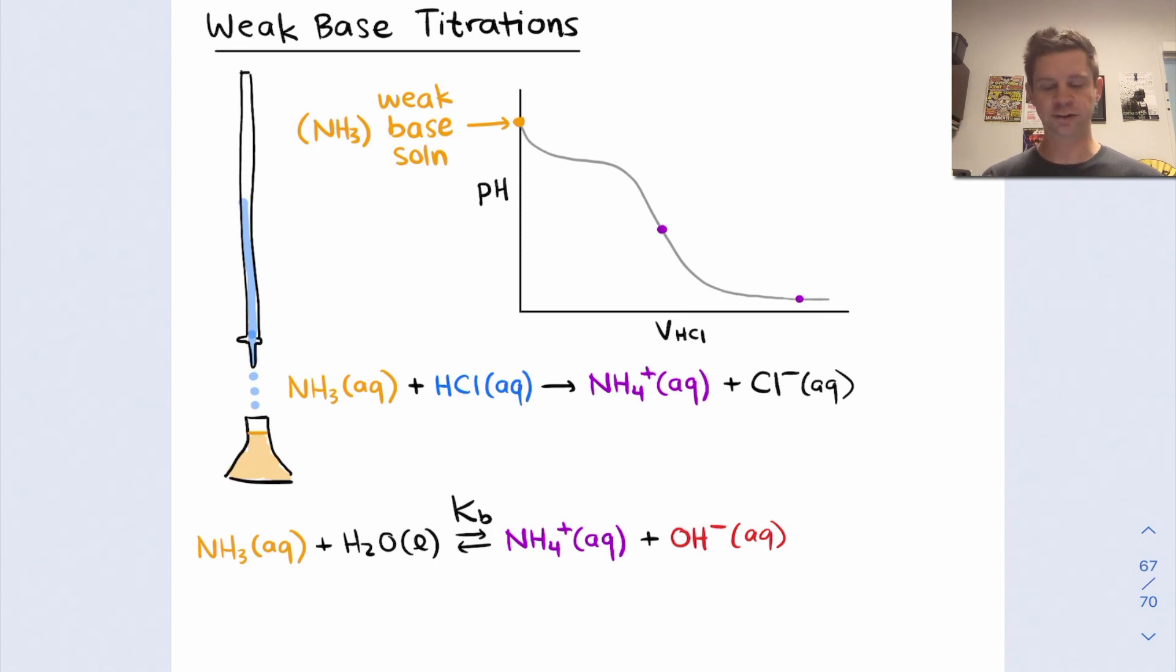As we start to add HCl, NH3 gets converted partially to NH4+. In the region where we've got similar concentrations of NH3 and NH4+, we have a buffer. Right at the center of that buffer region is a very important point called halfway to equivalence, or V half, that we'll return to in a second.